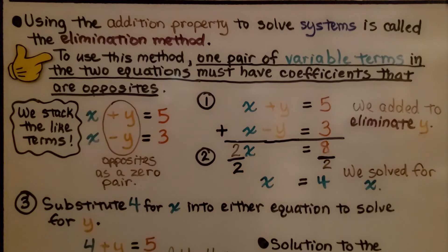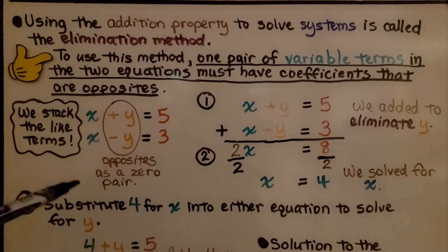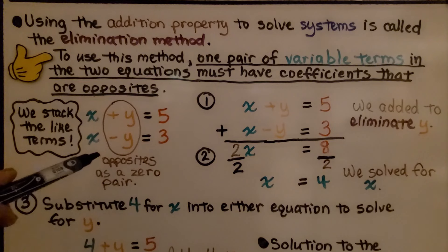Using the addition property to solve systems is called the elimination method. To use this method, one pair of variable terms in the two equations must have coefficients that are opposite.